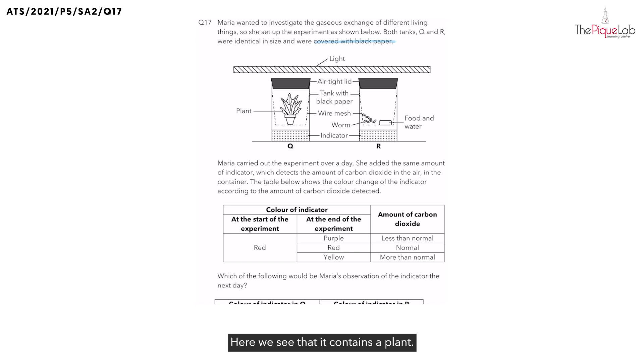Here, we see that it contains a plant. Since the tank is covered with black paper, how do you think the plant is affected? Is there something that it is unable to obtain? It is unable to obtain light because black paper is opaque and does not allow light to pass through. Now, which plant process do you think of when we talk about light? Photosynthesis.